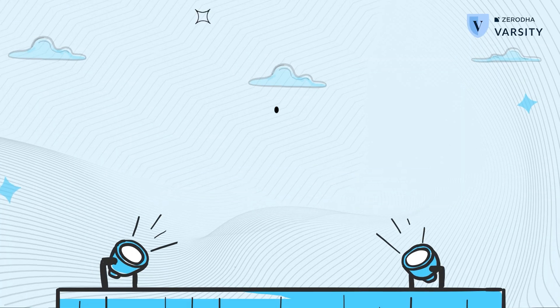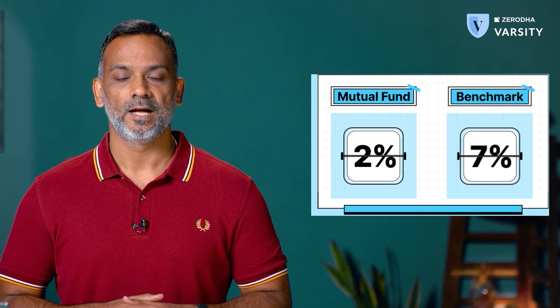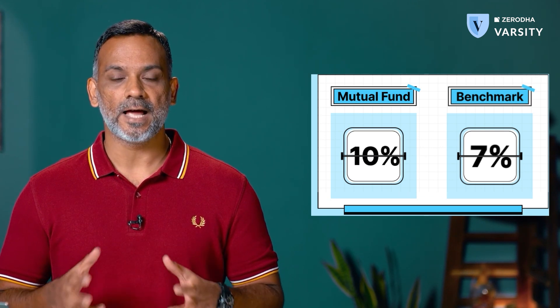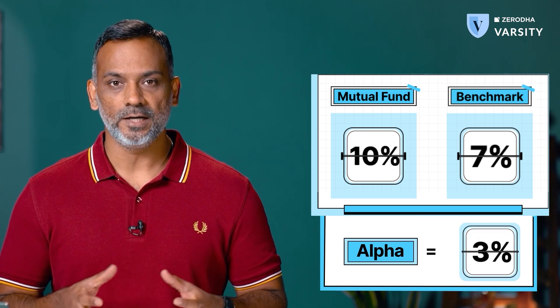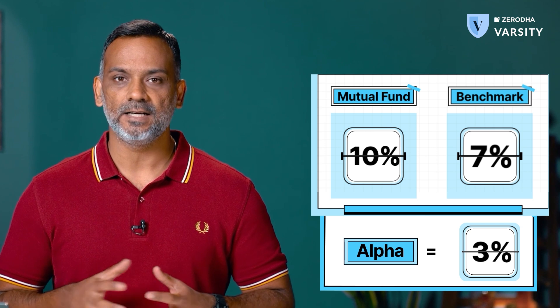Let's discuss the next metric — the alpha. Most people tend to think that the alpha is a measure of outperformance of the fund with respect to its benchmark. For instance, if the benchmark has delivered 7% and for the same time period the mutual fund has delivered 10%, then the alpha is perceived as 3%. While this is broadly true, in the context of mutual fund, alpha is slightly different.